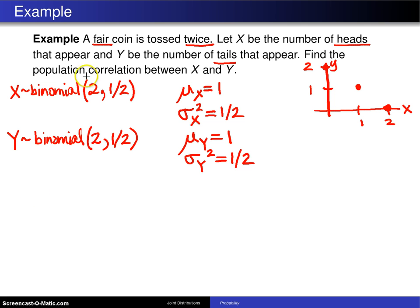So at this point we'd like to calculate the population correlation and that will be rho, and by definition we have the covariance of X and Y in the numerator and we have sigma X sigma Y in the denominator.